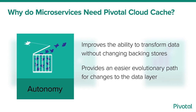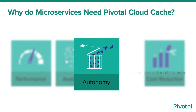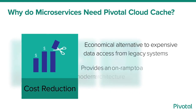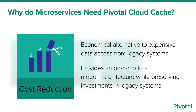Pivotal Cloud Cache creates an evolutionary path for changes to the data layer. It provides an economic alternative to expensive data access from legacy systems, protecting investments in these legacy systems while allowing future investments to be focused on modern, microservices-based architectures.